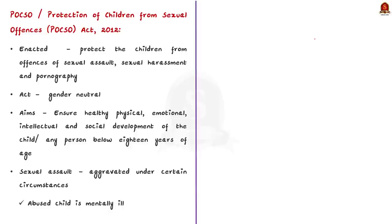Let us familiarize ourselves with the provisions of the Protection of Children from Sexual Offenses Act, that is the POCSO Act 2012. The POCSO Act has been enacted to protect children from offenses like sexual assault, sexual harassment and child pornography. Children, according to the Act, are individuals aged below 18 years.